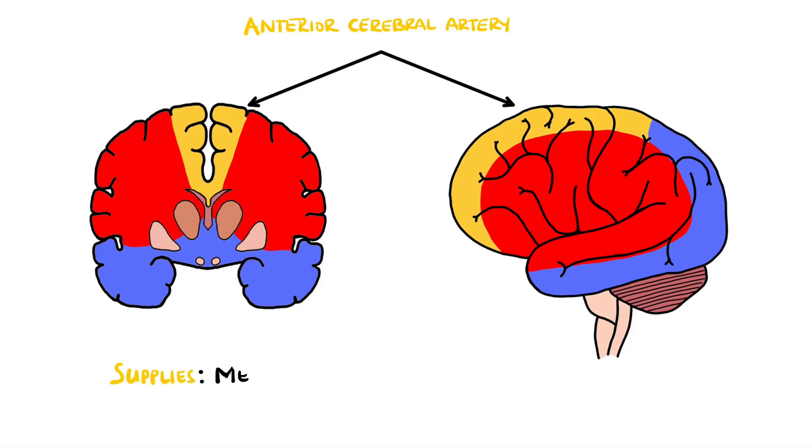It supplies the medial and superior frontal and parietal lobes as well as some other structures such as parts of the corpus callosum and basal ganglia.